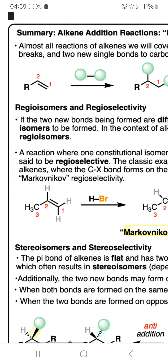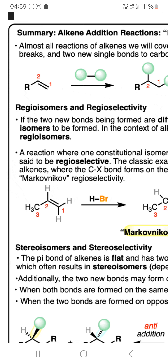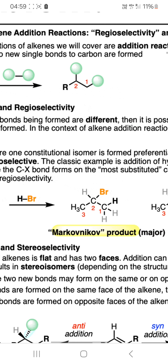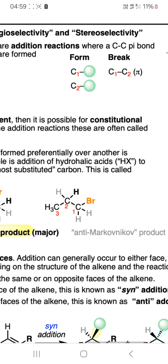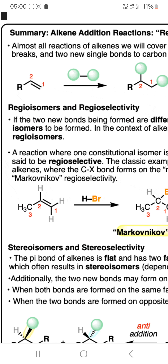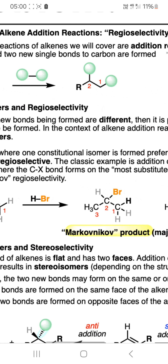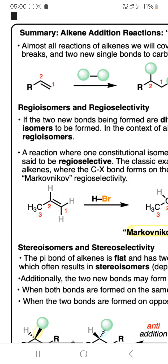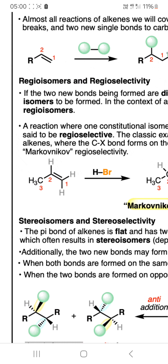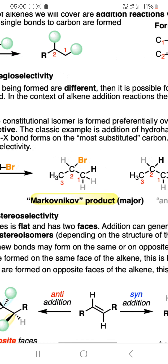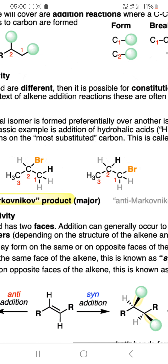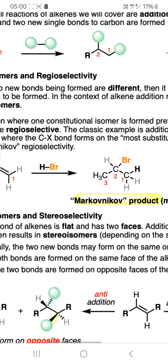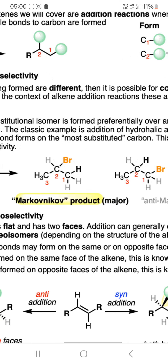Regioisomers and Regioselectivity — what is the meaning of these two words? If the two new bonds being formed are different, then it is possible for constitutional isomers to be formed. In the context of alkene addition reactions, these are often called regioisomers.